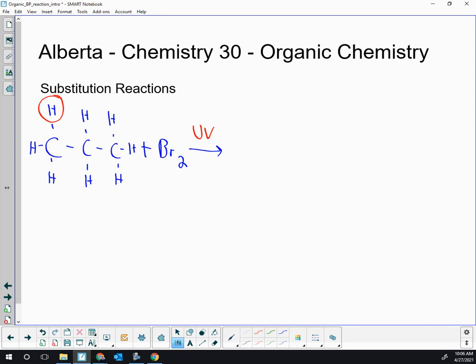So I'm going to substitute out that red circled H and switch one of the Brs into its place. So I have a three carbon long chain. That very first H, I'm going to switch and put a Br in its place, a bromine atom, and none of the other Hs are going to be replaced or substituted.